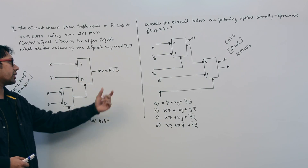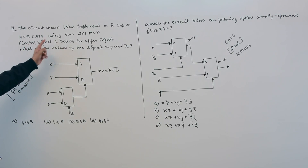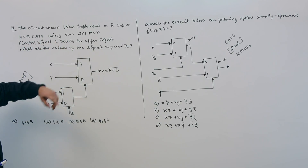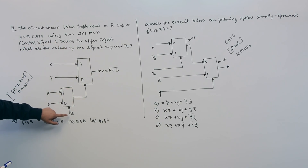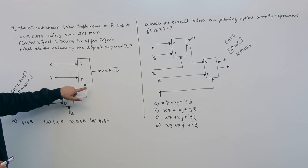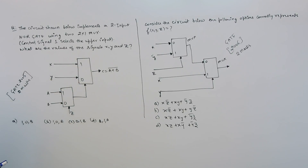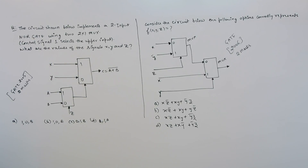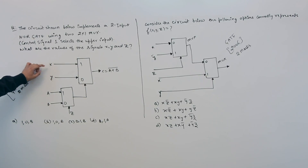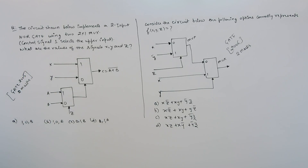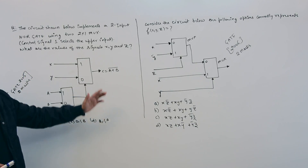This is the equation for a NOR gate. The control signal 1 selects the upper input — if you give a control signal of 1, it will select the upper input. The question asks: what are the values of the signals X, Y, and Z that should be given to implement this NOR gate?